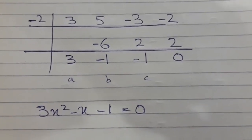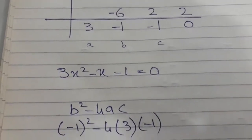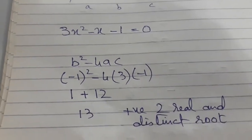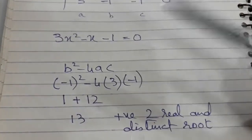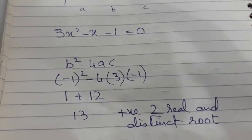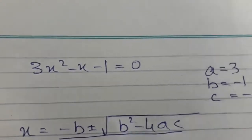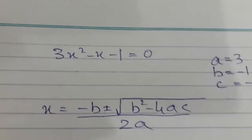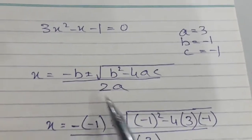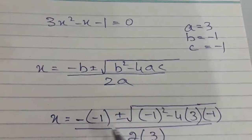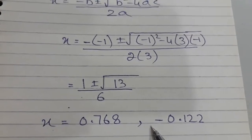Now I apply the discriminant b squared minus 4ac to see what type of roots the quadratic gives. With a = 1, b = minus 1, c = minus 1, the discriminant is positive: 13. This tells me the quadratic has two real and distinct roots. Since I cannot factorize it, I apply the quadratic formula with a = 1, b = minus 1, c = minus 1, and I get two roots.